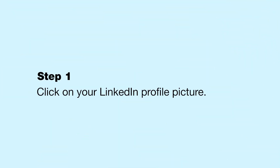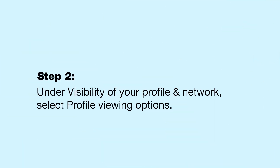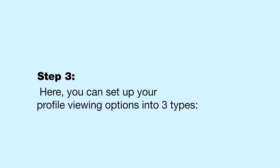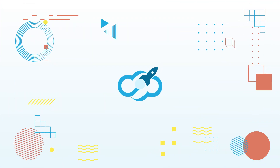Step one: click on your LinkedIn profile picture at the top right and press Settings and Privacy. Step two: under Visibility of Your Profile and Network, select Profile Viewing Options. Step three: here you can set up your profile viewing options into three types — public version, private profile characteristics, and private mode.